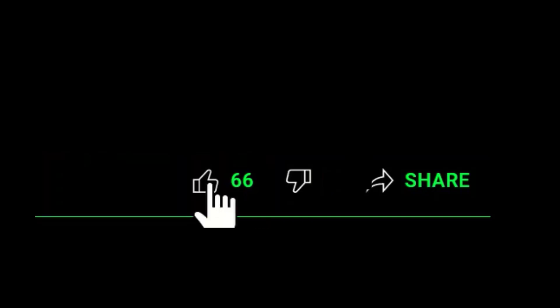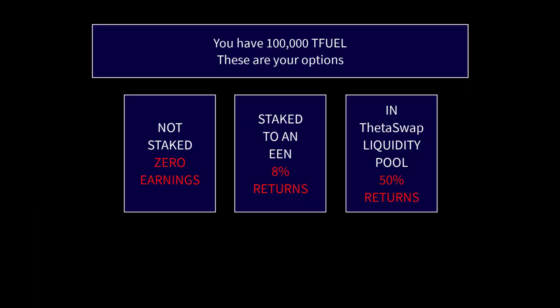We're going to look at the three options that you have if you have a hundred thousand T-Fuel — and that can really be any number, but we're just going to use a hundred thousand in this example. You basically have three options.